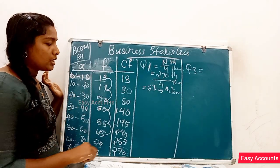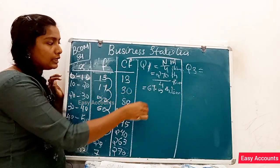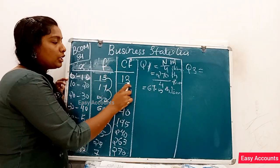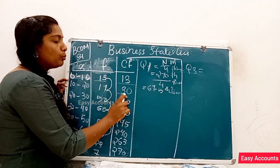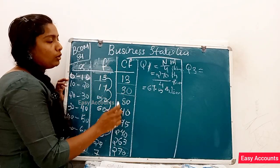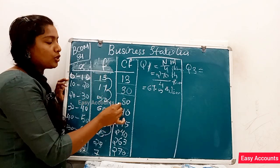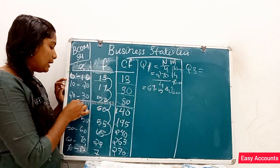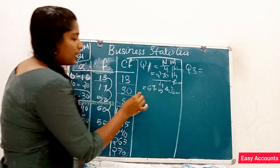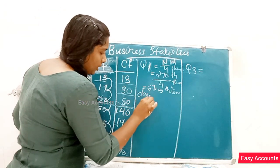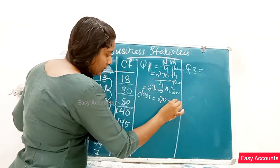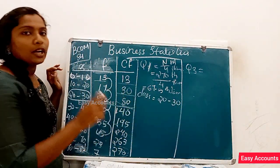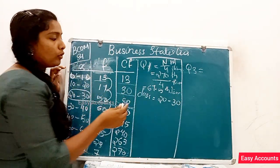Let's take a look at all 3 quartile points. We are at 13. The class value is 10. The class is 30.